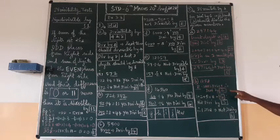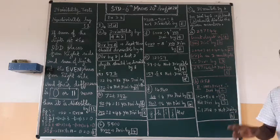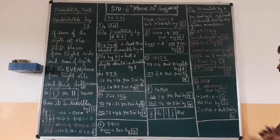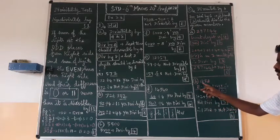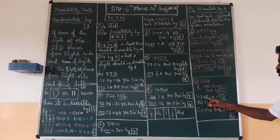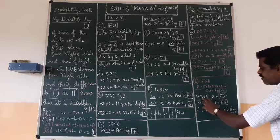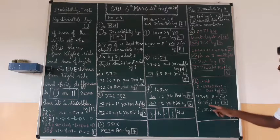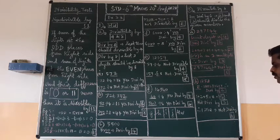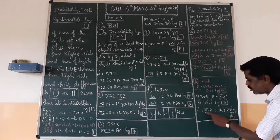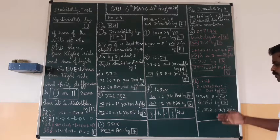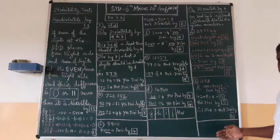Second example: 1258. The last digit is 8 — even — so it is divisible by two. Now check for three: 1 + 2 + 5 + 8 = 16. Is 16 a multiple of three? No. So 1258 is not divisible by three, and therefore not divisible by six. We will stop here today and continue in the next session. Thank you.